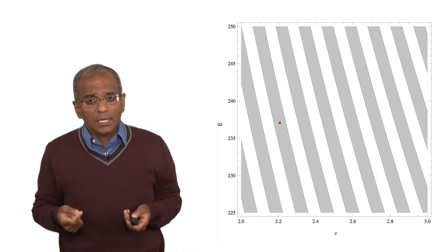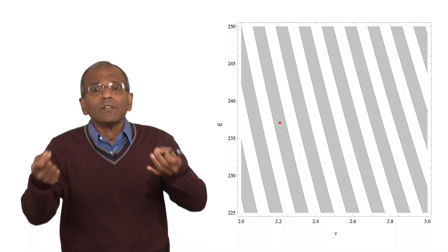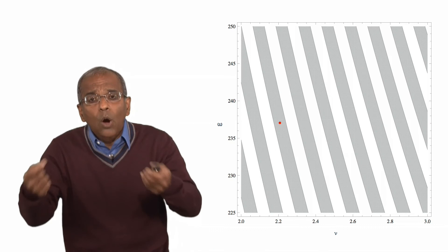And so a natural question is, how does an uncertainty in the initial velocity and in the initial angular velocity affect the outcome of the toss?